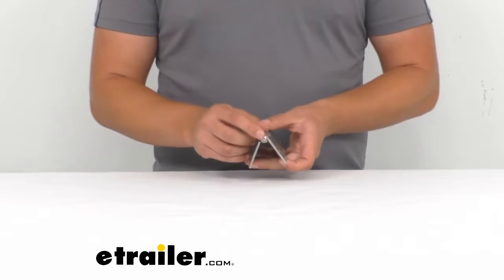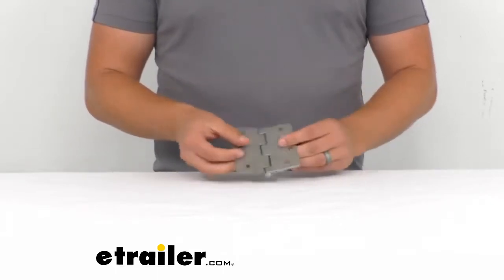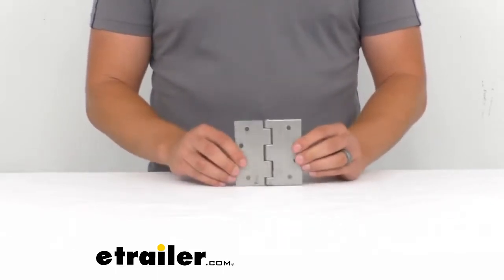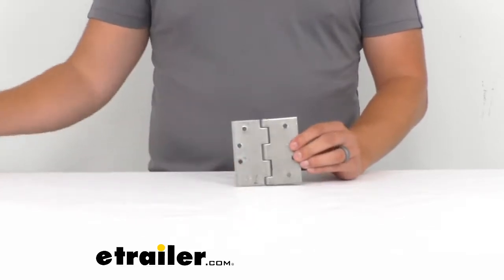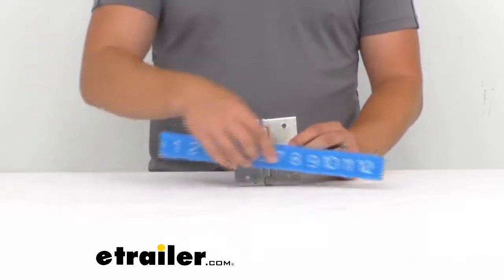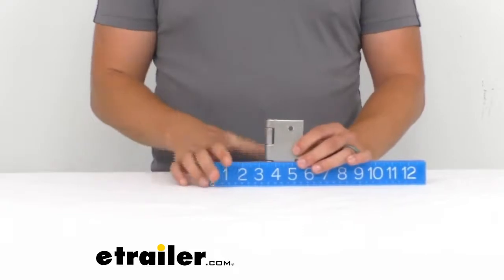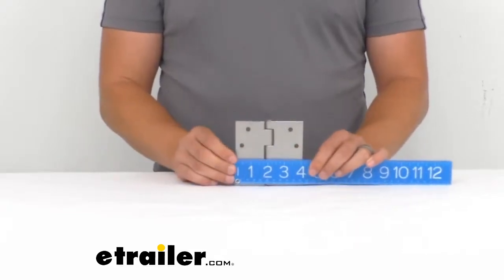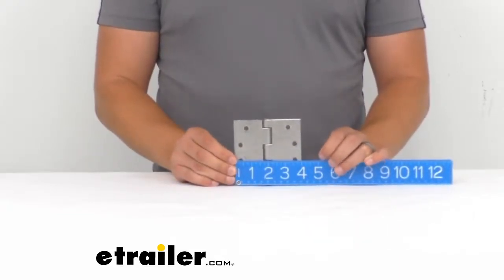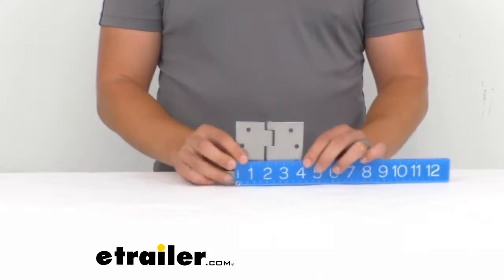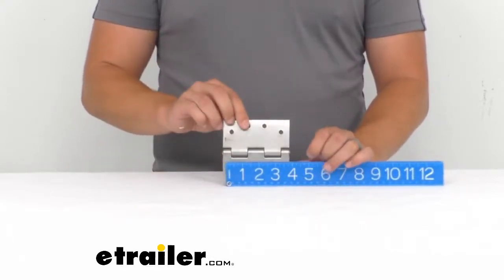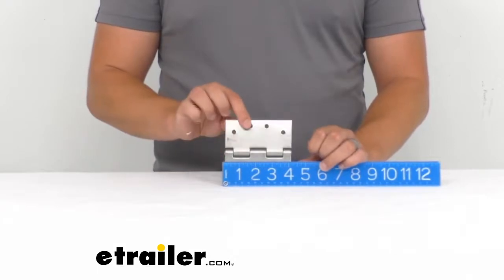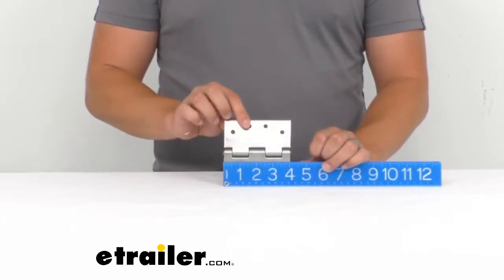As far as other dimensions go, when the hinge is laying flat like this, let me grab my measuring stick here. It's going to be four inches by four inches, so four inches from side to side right here. If I turn it to the side right here, we're going to get four inches from side to side right there.